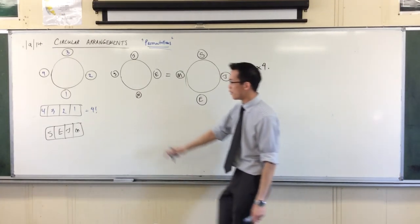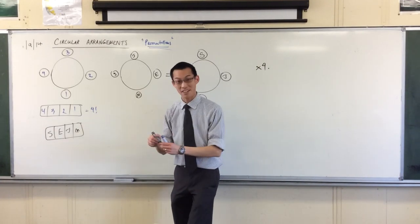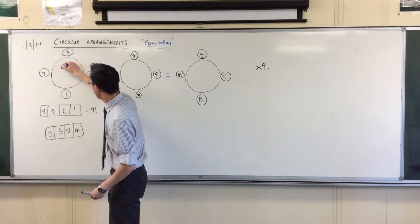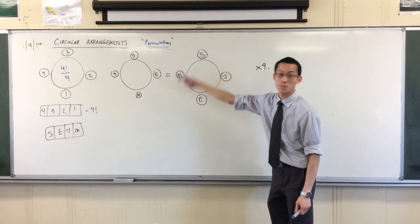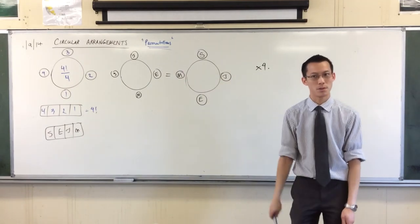So instead of four factorial, what I really have is four factorial over four. And that four comes from the fact that I've got four spots and four people to put in those spots.